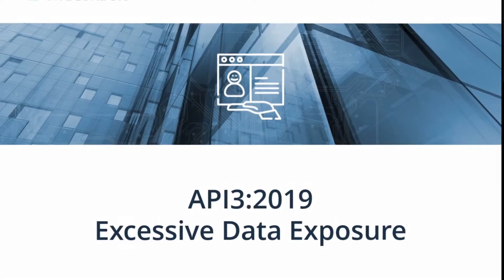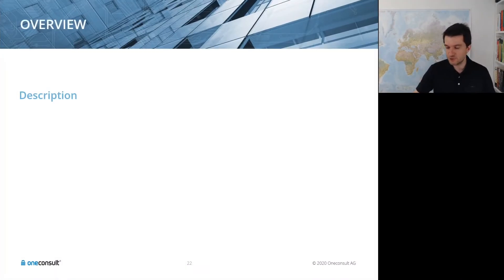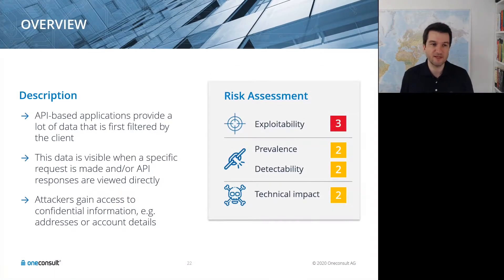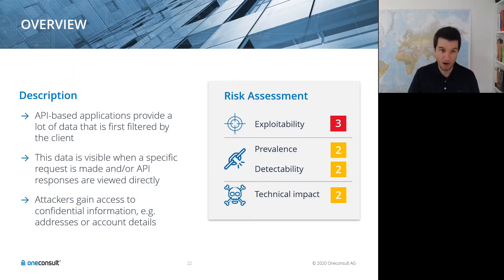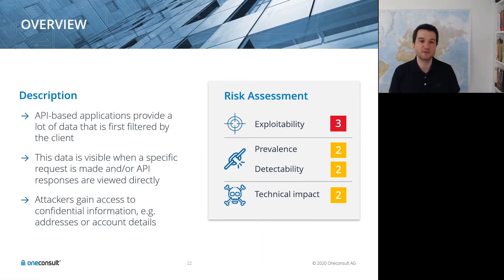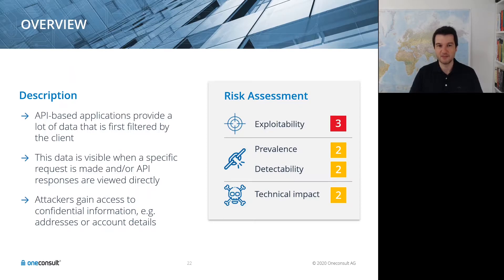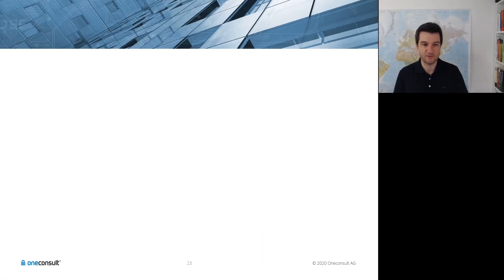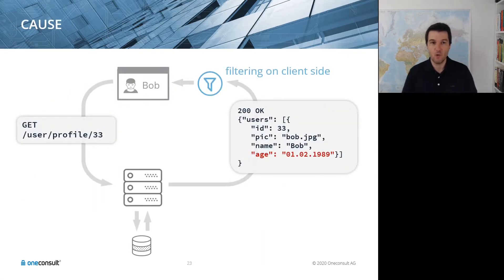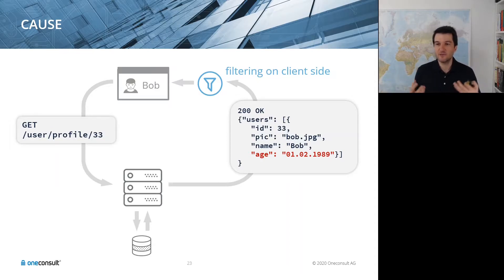The third item is excessive data exposure. While not specific to APIs, it's more prevalent because API-based applications provide a lot of data that is often first filtered by the client, making it visible to attackers intercepting traffic. An attacker may gain access to confidential information such as addresses or account details. The REST and API ecosystem encourages developers to implement APIs generically — for example, simply taking an object and outputting it as a JSON string.